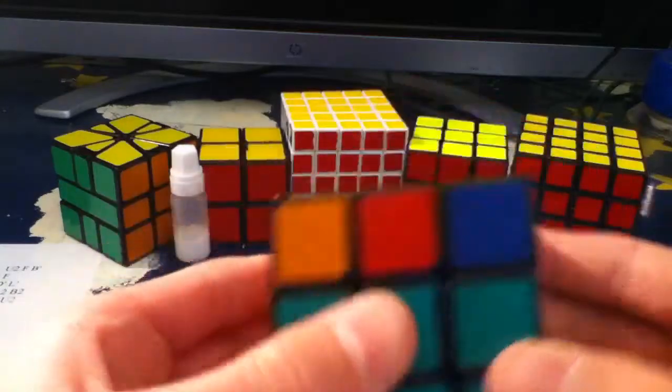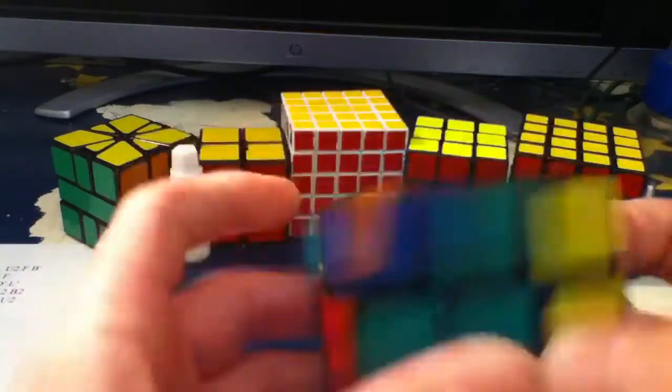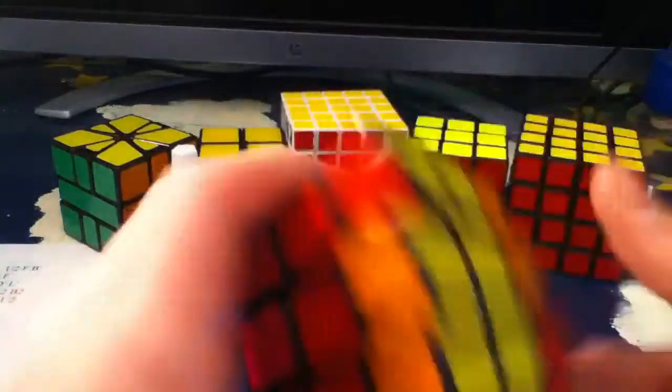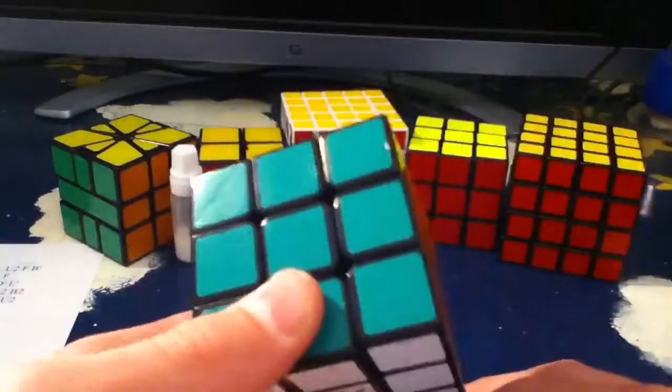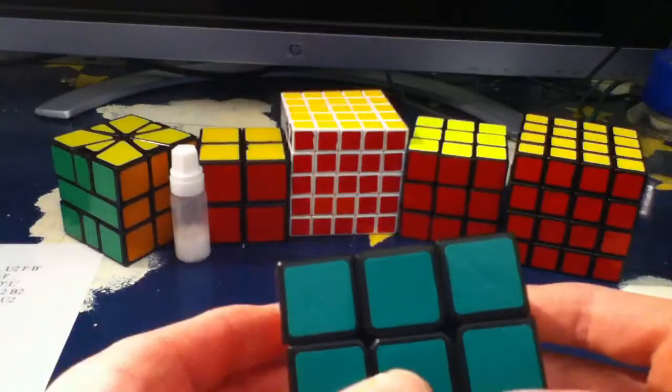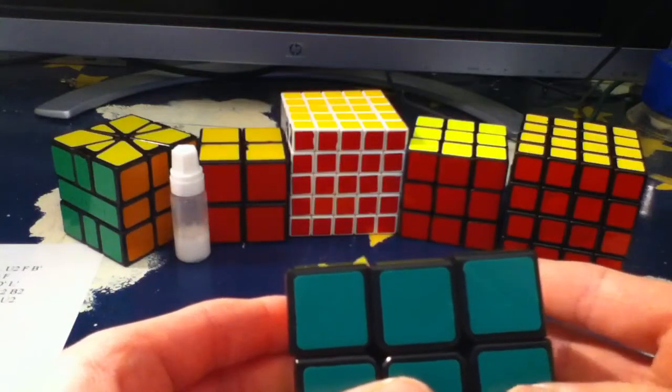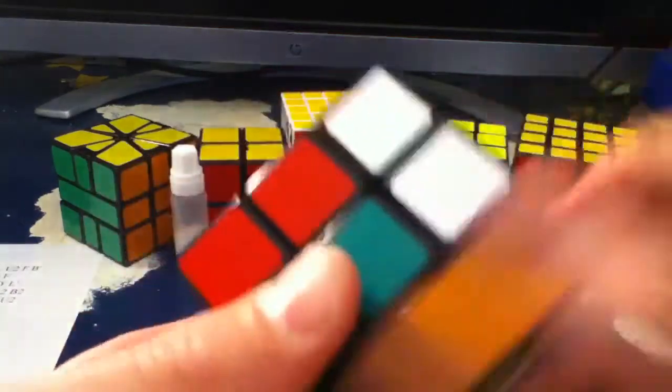So now that F2L is done, OLL, and it's an A perm. So now we're on the fourth scramble.